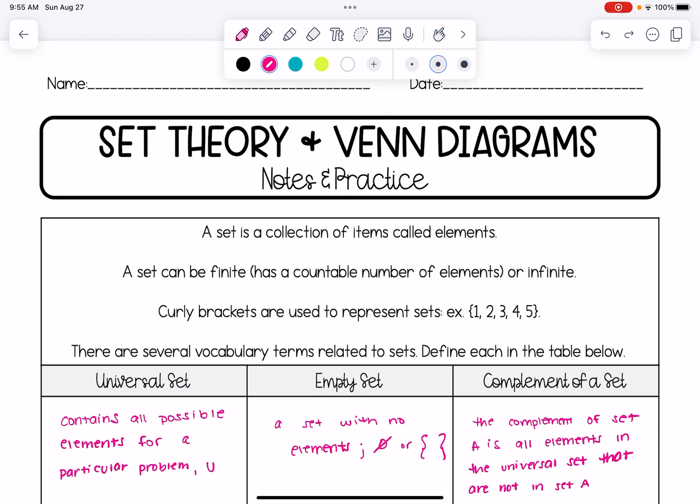In this video we are going to be learning about set theory and Venn diagrams. So a set is basically a collection of items and we call these items elements. A set can be finite, that just means it has a countable number of elements, or it could be infinite meaning we can't count the number.